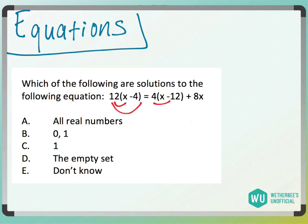So distribute, it would be 12x minus 48. I have to distribute the 12 all throughout here. 12x minus 48 equals 4x minus 48.